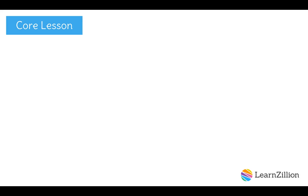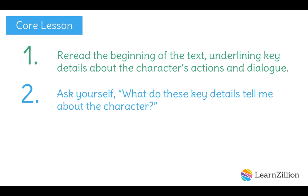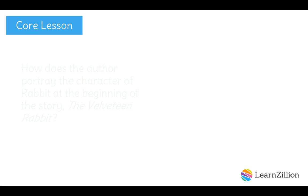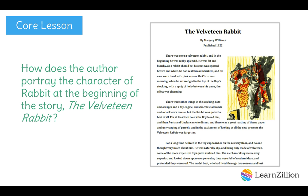Today we're going to be exploring our question about the author's initial portrayal of the main character, Rabbit, and we're going to use these three steps to guide us. Step 1: Reread the beginning of the text, underlining key details about the character's actions and dialogue. Step 2: Ask yourself, what do these key details tell me about the character? Step 3: Jot down how these details connect to make a supported inference about the character. Let's keep in mind our focus question: How does the author portray the character of Rabbit at the beginning of the story, The Velveteen Rabbit? So I know that I'm going to concentrate on the beginning of the story, where we first get to know the character of Rabbit through his speech and actions.